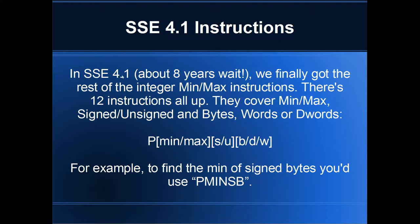In SSE 4.1, about eight years later, we finally got the rest of the integer min and max instructions — 12 integer comparison instructions in total. The mnemonic structure is: put P for packed, then choose min or max, then choose S or U for signed or unsigned, then put your data type — B for byte, D for dword, W for word (16-bit). For example, minimum of signed bytes is PminSB, and maximum of unsigned dwords is PmaxUD.